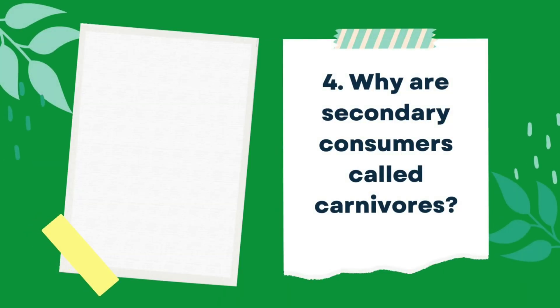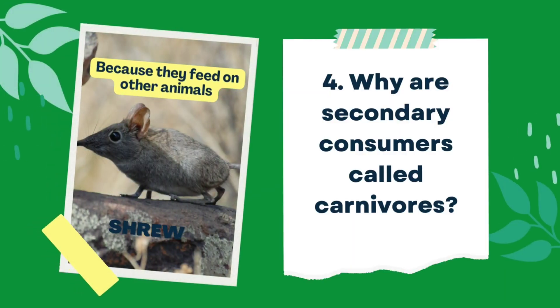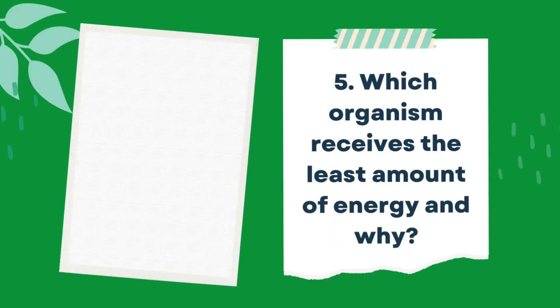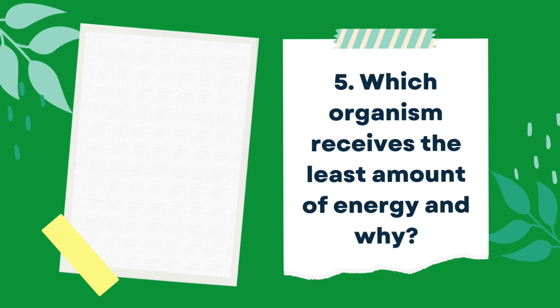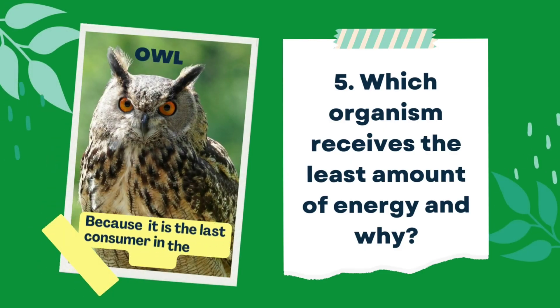Question number four: why are secondary consumers called carnivores? The answer is that most secondary consumers eat other animals. Question number five: which organism receives the least amount of energy, and why? The answer is the owl, because it is the last consumer in the pyramid.